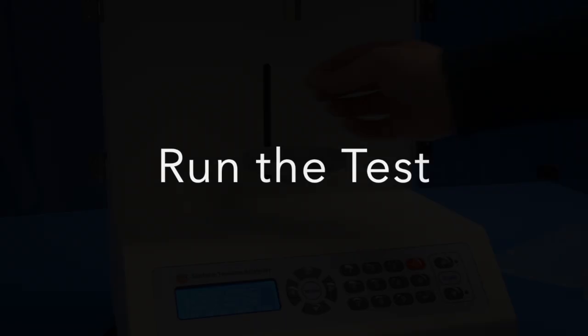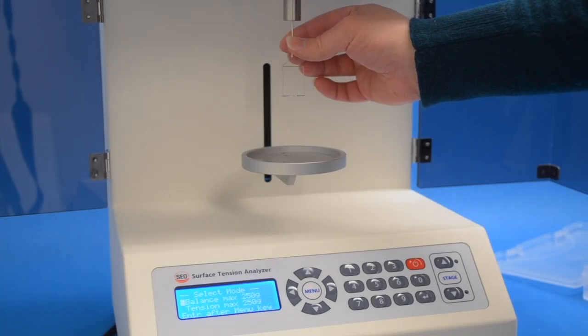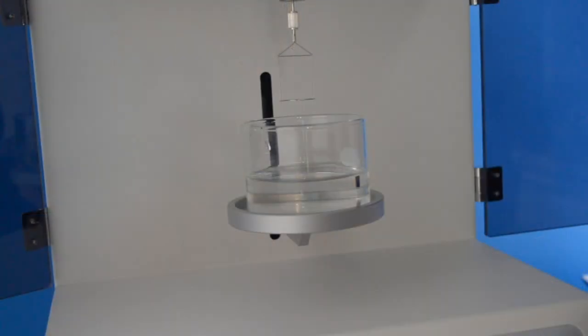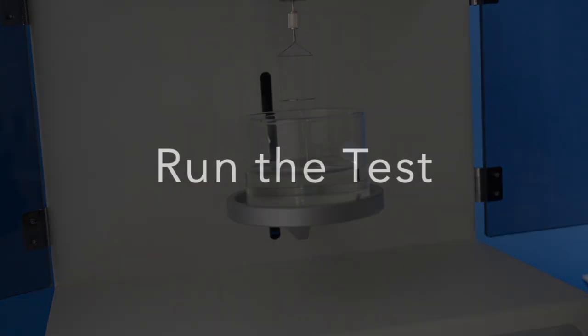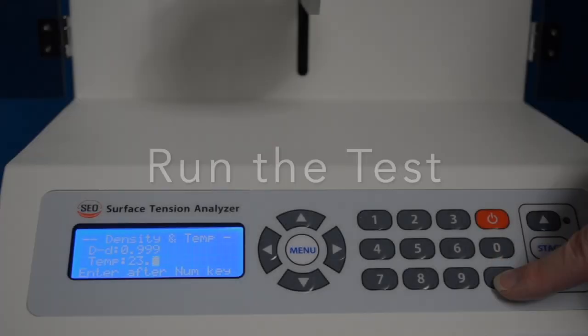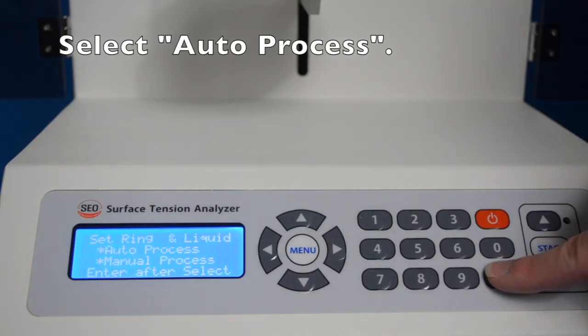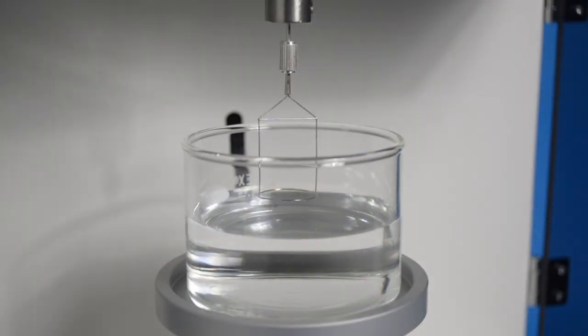Running a test has three simple checkpoints. The first is to be sure the ring is inserted. Number two is that your sample is loaded on the stage. When you're ready to start the test, simply select autoprocess.